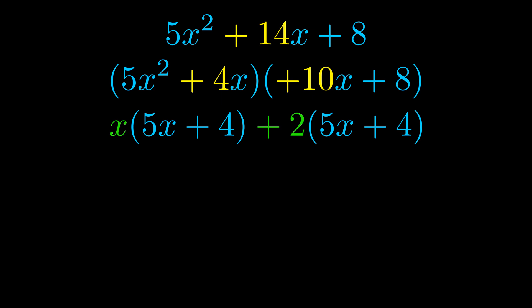Notice also how what remains inside of the parentheses is the same in both cases. The blue values are the same. Those blue values will become one of our factors and we will combine the two green values, the GCFs that we pulled out, to get the other one. And that is our fully factored equation.